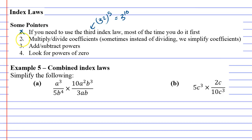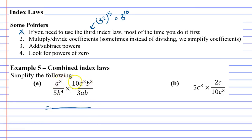Step 2 is the next step that we usually focus on, which is to multiply or divide coefficients. Whenever we get two sets of fractions together, I really like to combine them as one fraction first — it just makes your life a lot easier. All you do is write it as one fraction, and you combine everything at the top and everything at the bottom.